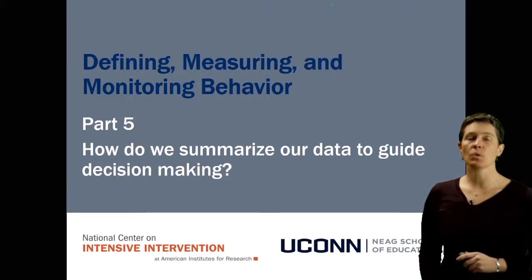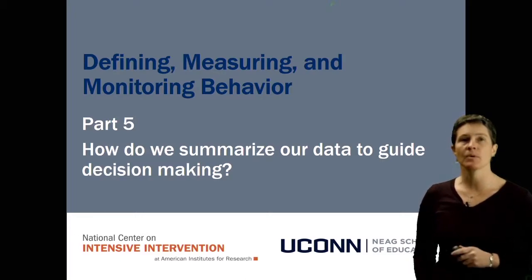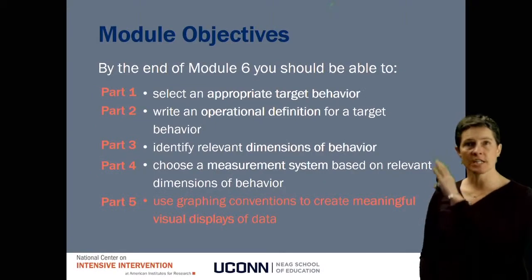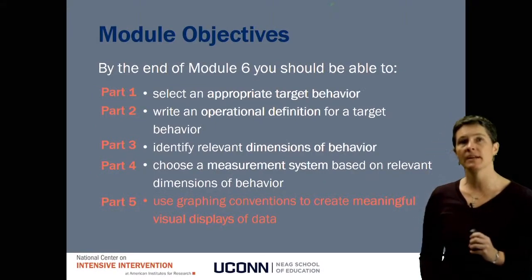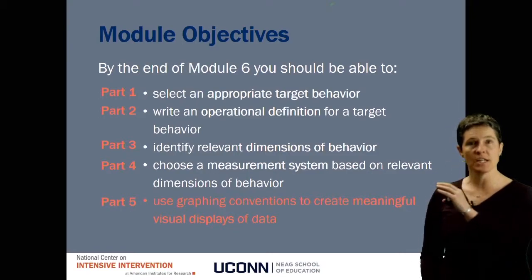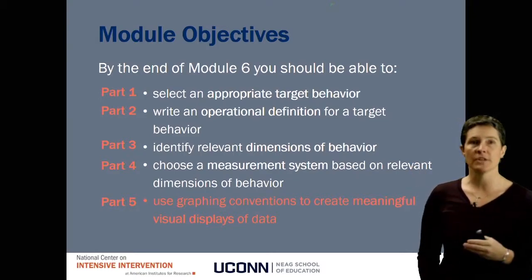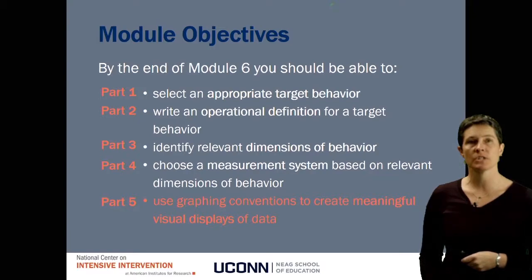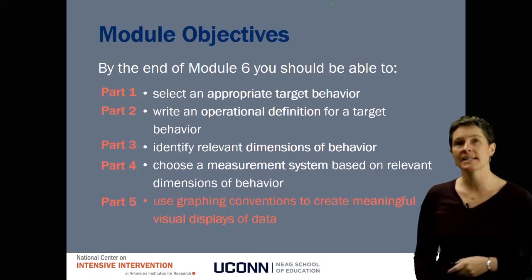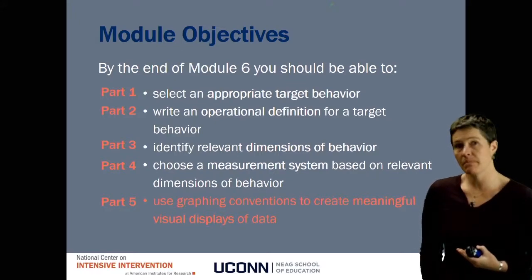In part five, we're going to think about how we take everything we've talked about in this module and summarize it into a graph to help guide our decision-making. We've talked about how to select appropriate behaviors, defined them operationally, refined that definition using the dimensions of behavior, and thought about the different ways we can measure behavior. Now we're going to look at some quick ways to graph this information, because graphing is a really great way to help us make decisions with our data.